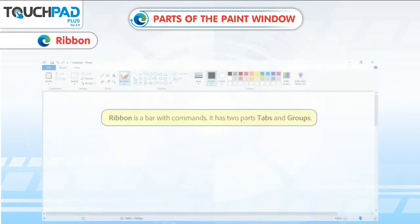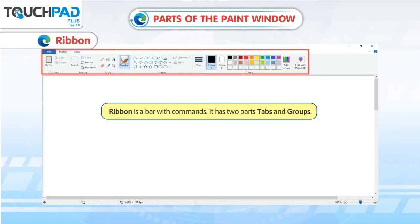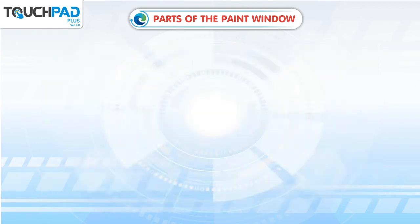Ribbon. The Ribbon is a bar with commands. It has two parts: tabs and groups.